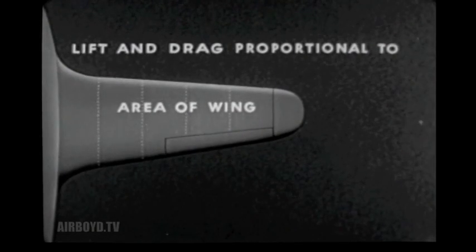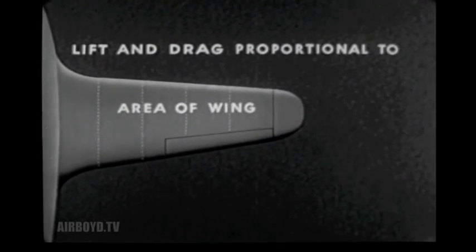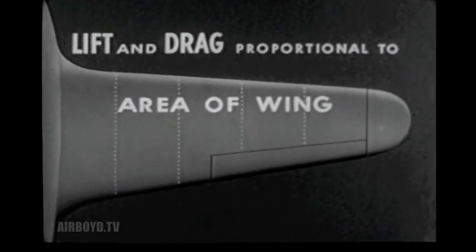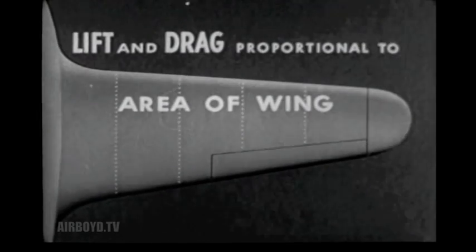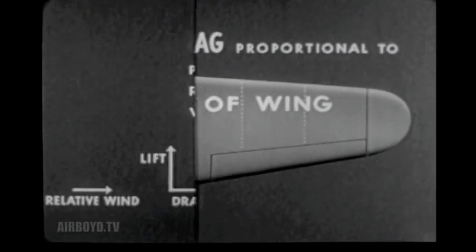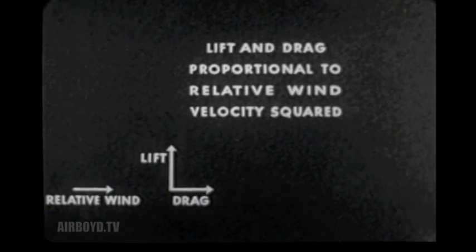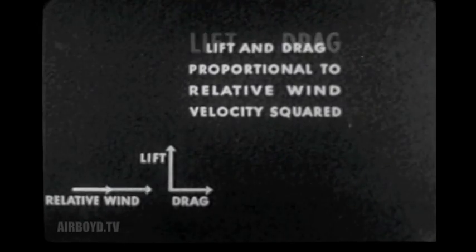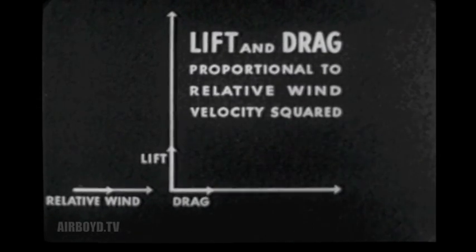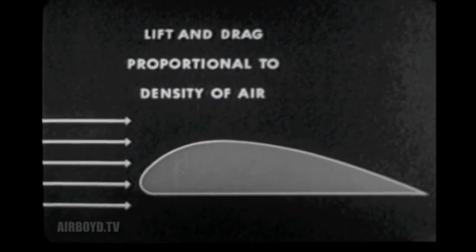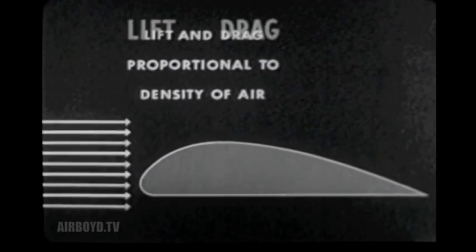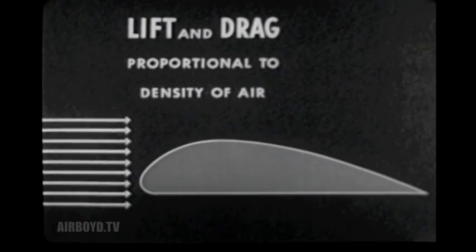Wind tunnel tests have also proven that for any given airfoil, lift and drag vary directly with the area of the wing. If the area is doubled, lift and drag are also doubled. Lift and drag vary directly as the square of the velocity of the relative wind. If wind velocity is doubled, lift and drag are multiplied by four. Lift and drag are directly proportional to the density of the air passing over the airfoil. If air density is doubled, lift and drag are also doubled in value.